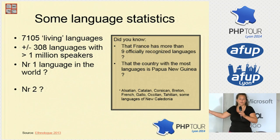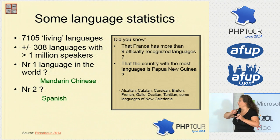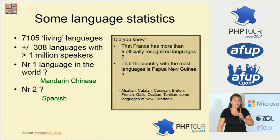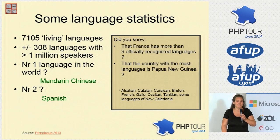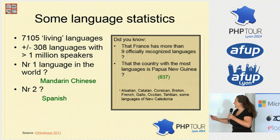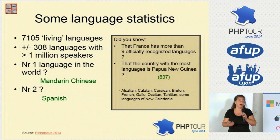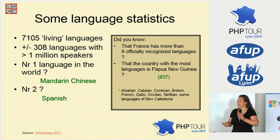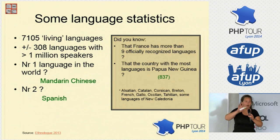The number one language in the world is Chinese, and number two is Spanish. The country with the most languages spoken has 837 — that's just in Papua New Guinea, one country. Even France itself has over nine officially recognized languages. I've actually listed them here — those are the official languages of France, and French is just one of them.